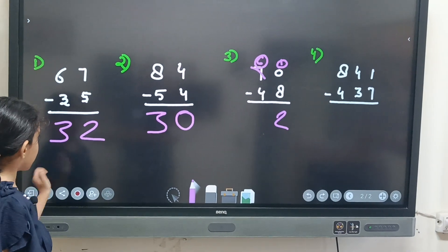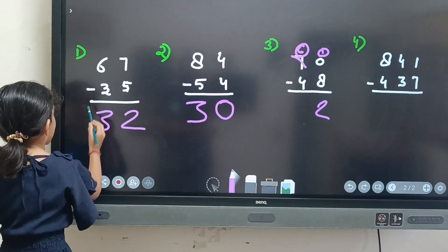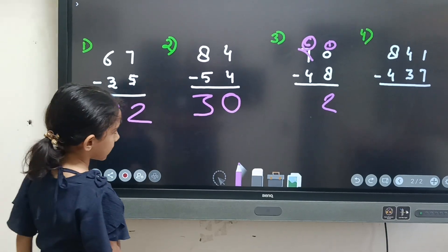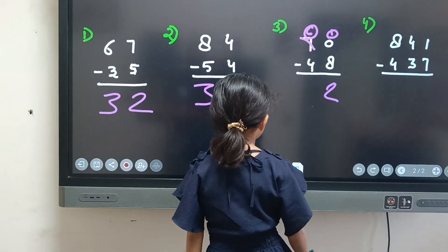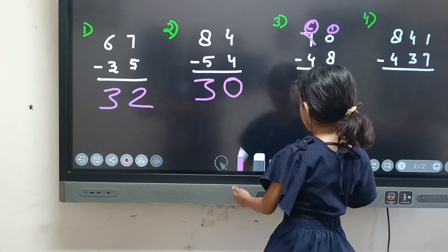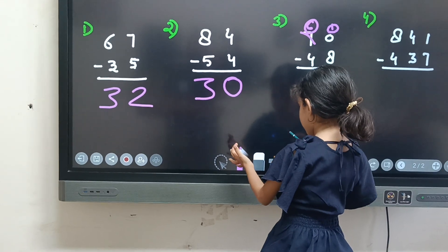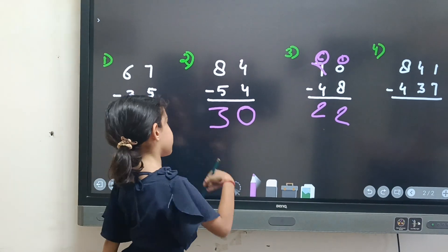And 6 minus 4. Now girls, 6 minus 4. 4 is bigger. So that answer is 2. That answer is 2. 2, 22.